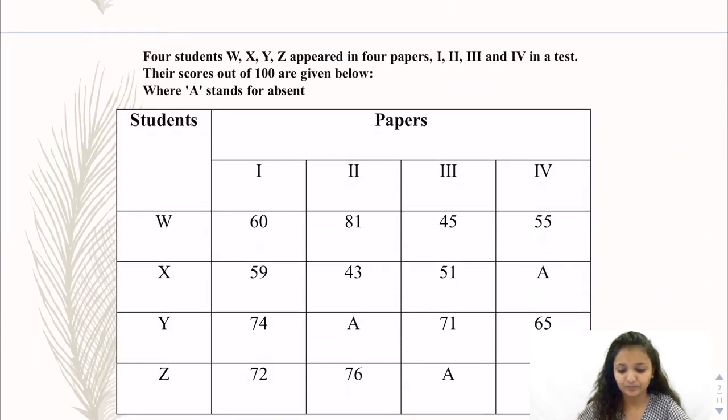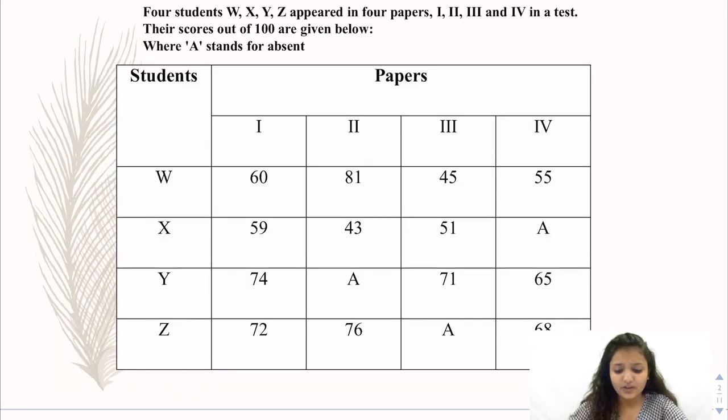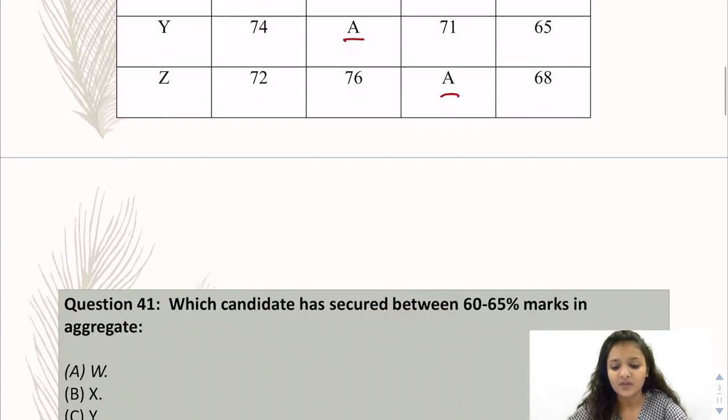Beginning with this section, the questions I follow are from question 41 to question 45 which is in continuation of the 150 question series. So do subscribe our channel. Here is a table given wherein 4 students are given and 4 papers. So per paper, there are marks given per student. And A stands for absent.